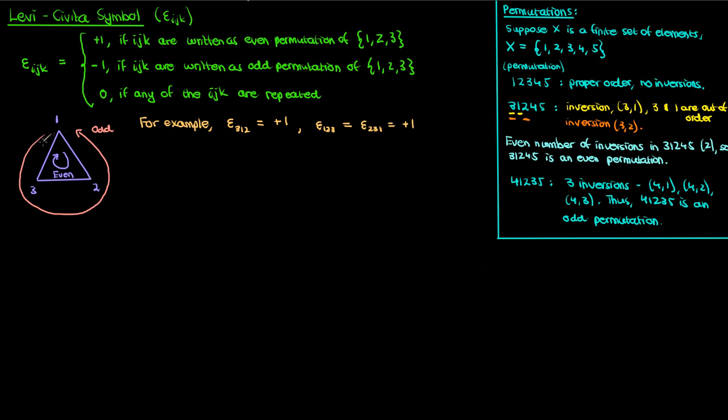However, if I have epsilon 1, 3, 2, then since 1, 3, 2 occurs in a counterclockwise order on this diagram, epsilon 1, 3, 2 corresponds to an odd permutation and is therefore equal to negative 1. The same logic applies to epsilon 3, 2, 1, and 2, 1, 3.